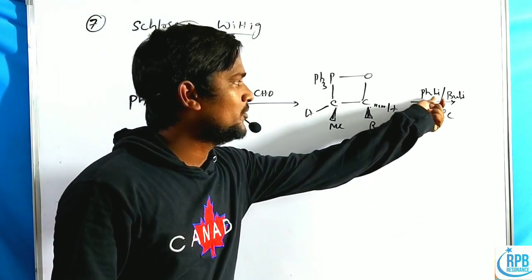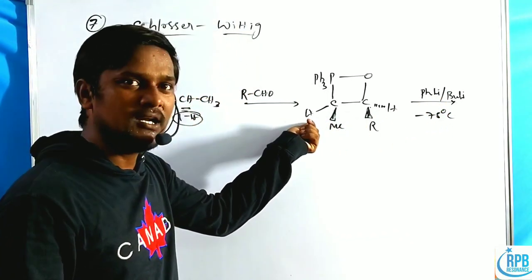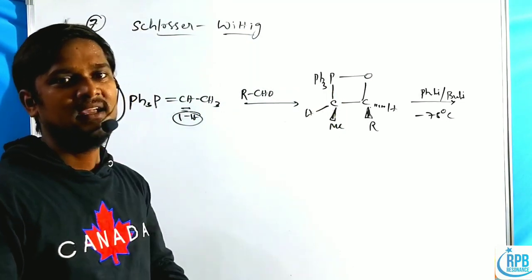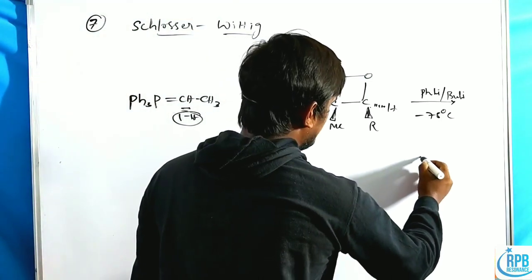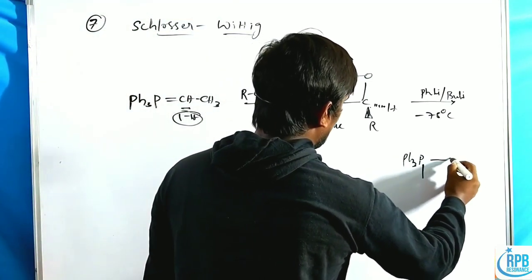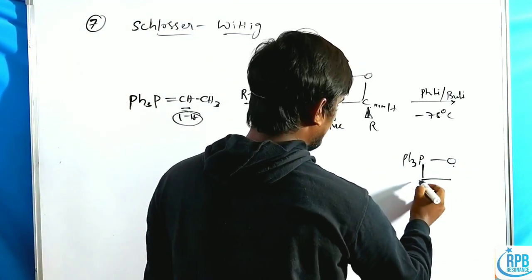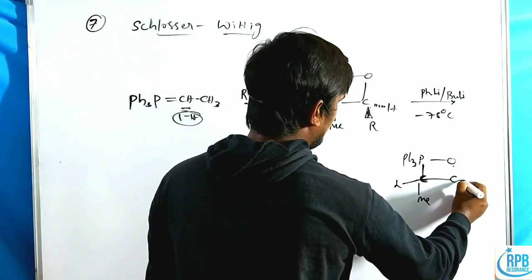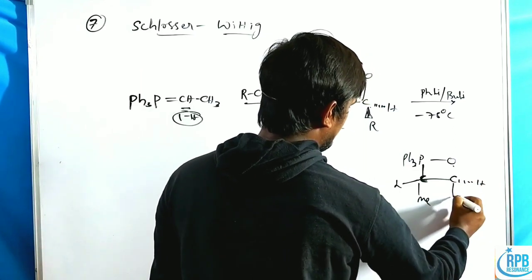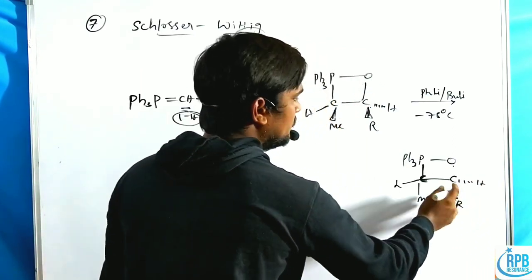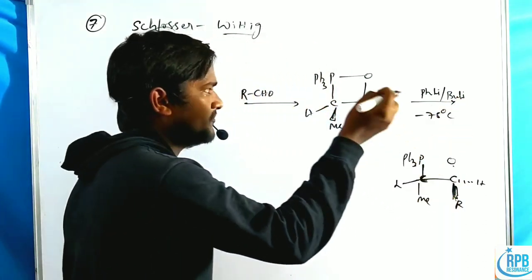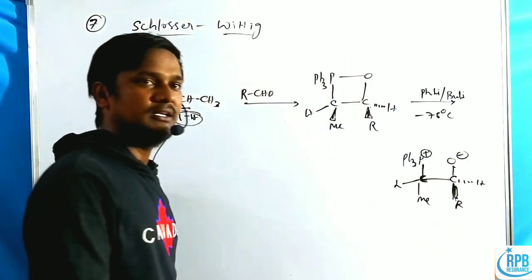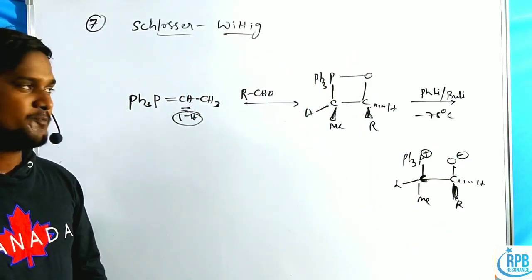The bulky lithium base abstracts the proton from the phosphorus-attached carbon (the alpha carbon), creating a lithium salt. The structure now has PPh3, oxygen, carbon, with lithium and methyl and hydrogen and R substituents. When tert-butyllithium is also present, it becomes the beta-oxido intermediate, also called the oxido-phosphetane intermediate. Proton abstraction takes place from above the plane, inverting the stereochemistry of these two groups.